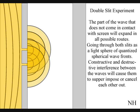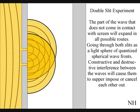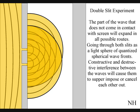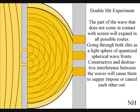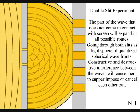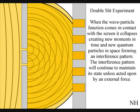The part of the wave that does not come in contact with the screen will expand in all possible routes, going through both slits as two light spheres of quantized wave-fronts. Constructive and destructive interference between the waves will cause them to superimpose, or cancel each other out. When this wave-particle function comes in contact with the screen, it will collapse, creating moments of time and quantum particles in the shape of an interference pattern.